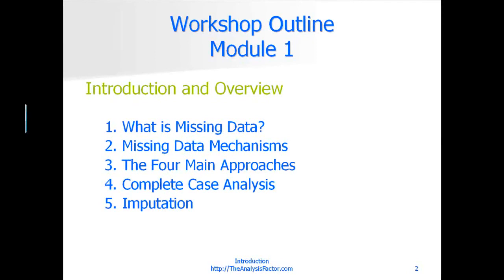Module one has five parts. We're going to start with an overview of the issues involved and the approaches to dealing with missing data. The very first part is 'what is missing data' — it sounds obvious but it's actually not as obvious as it seems. We'll talk about what missing data is and when it often occurs. We'll also talk about some related data issues in which data may not be entirely missing but only partial information is available.